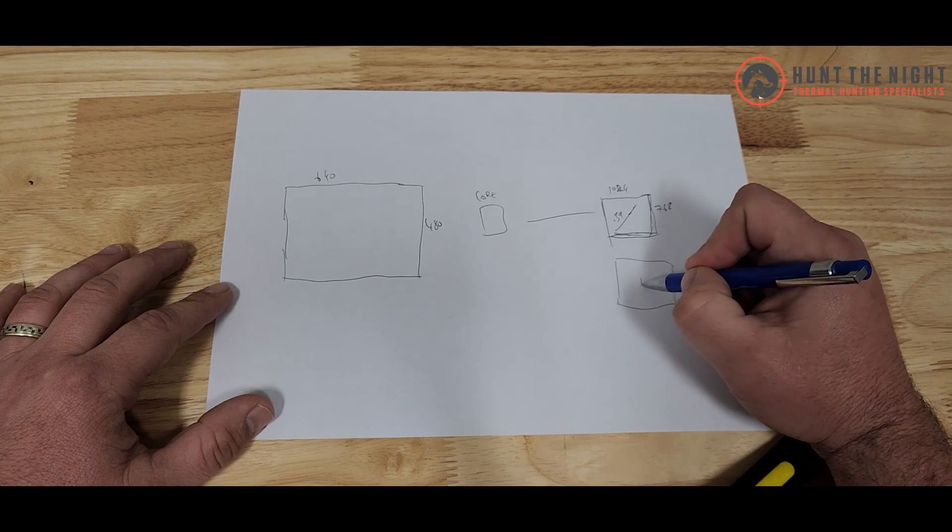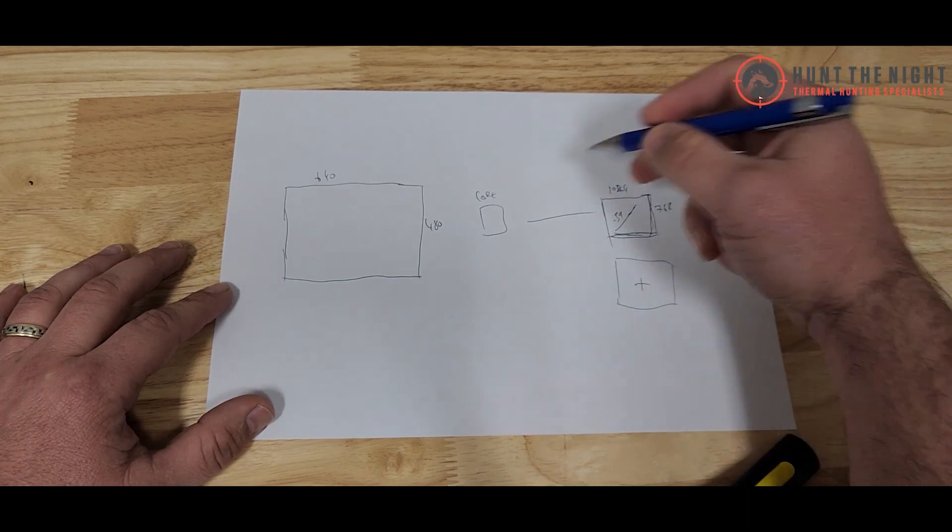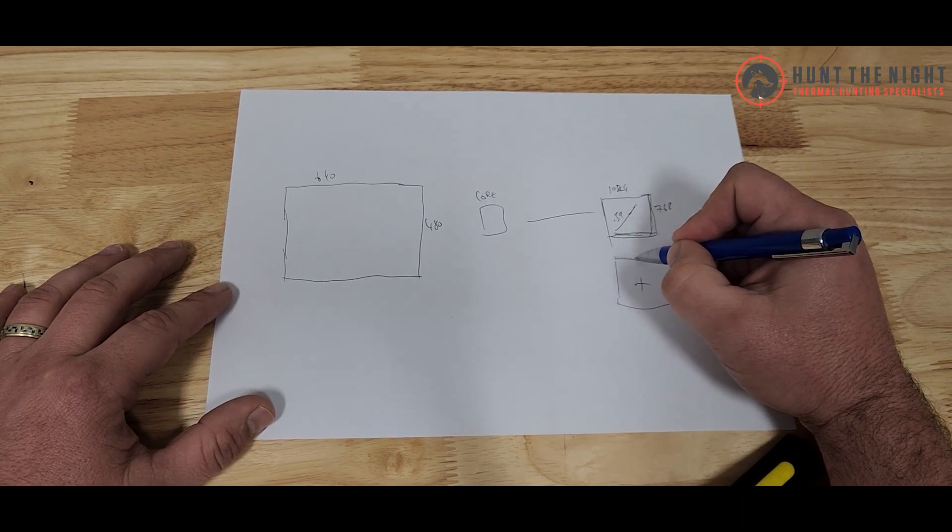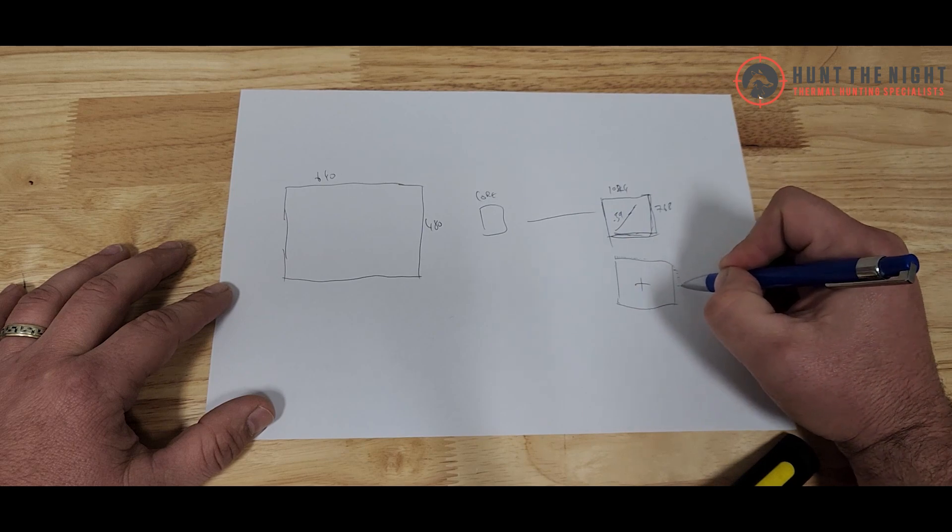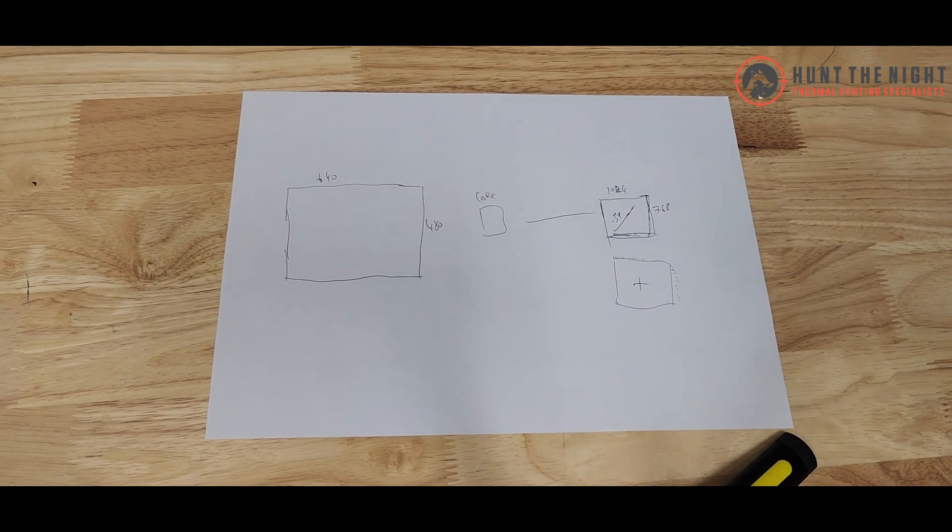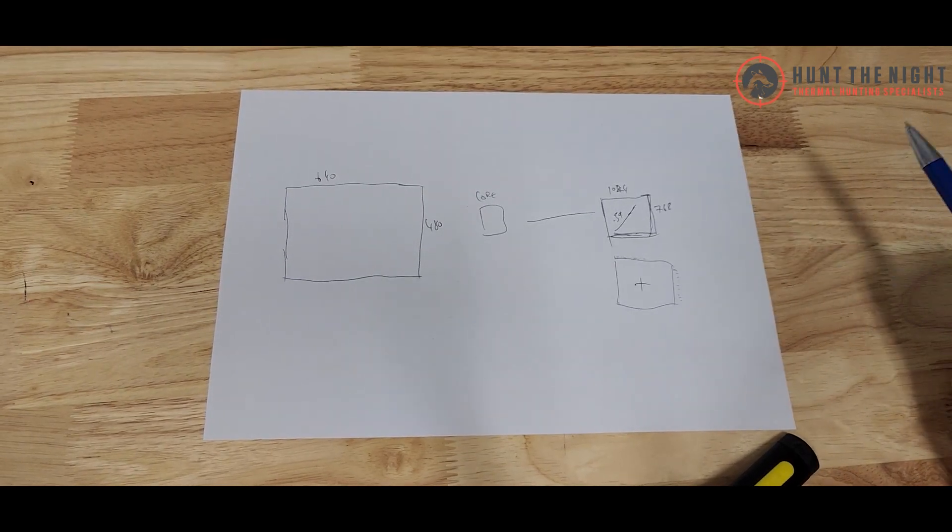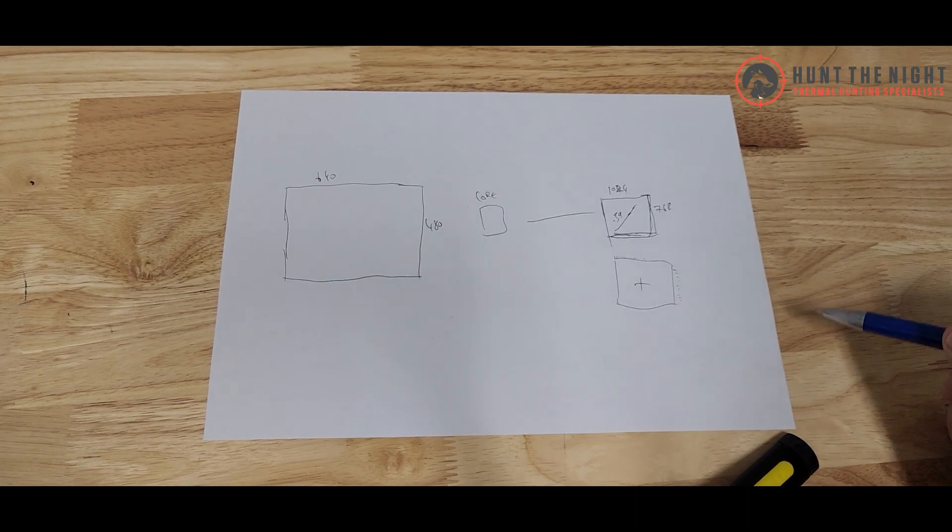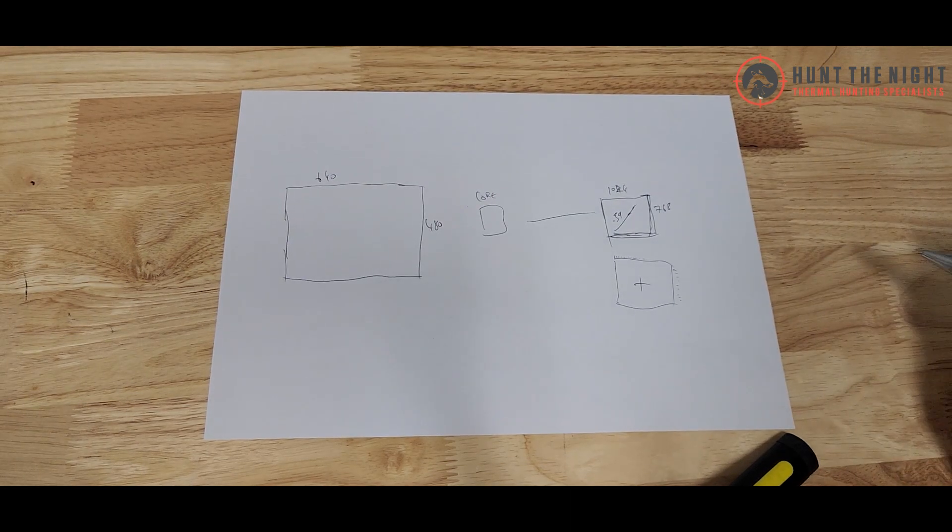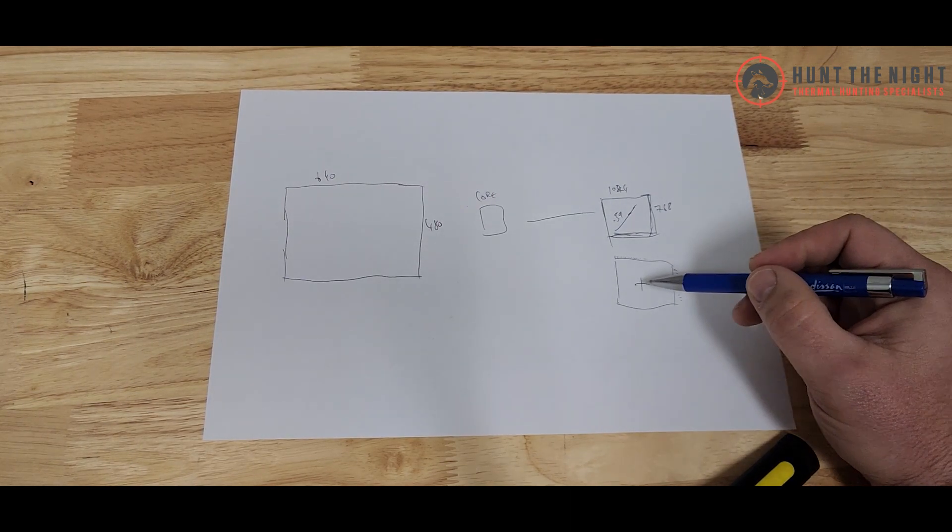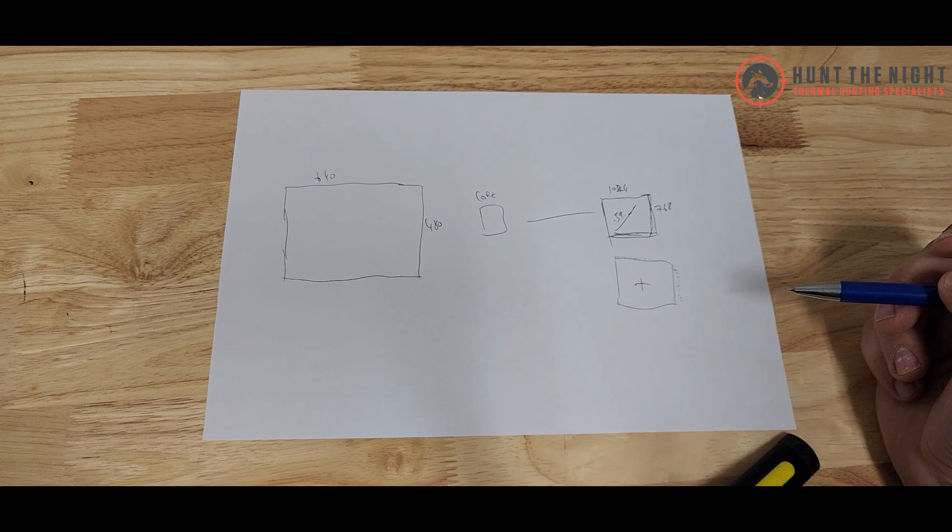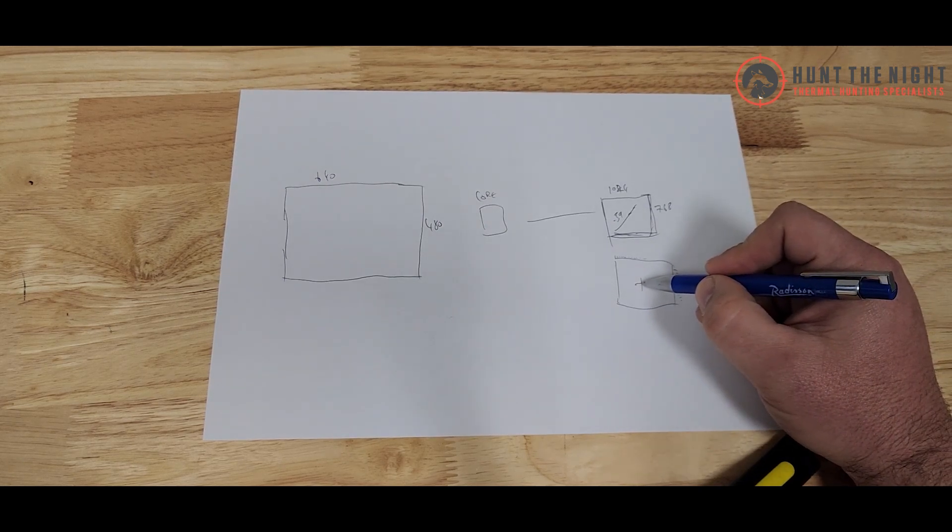Okay, and our reticle looks like that. Now, just like our sensor, this is 1024 columns and it's 768 rows. That's the dimensions of it. And if we look at our XP50, we have a field of view on here in two magnification of 12.4 degrees at 100 meters. And that gives us a click value. And when I say click value, I'm talking about reticle. And when we're changing the reticle and zeroing, that gives us a value of 21 millimeters at 100 meters.